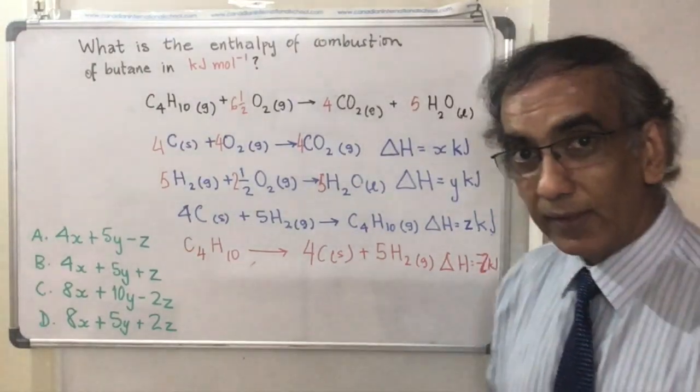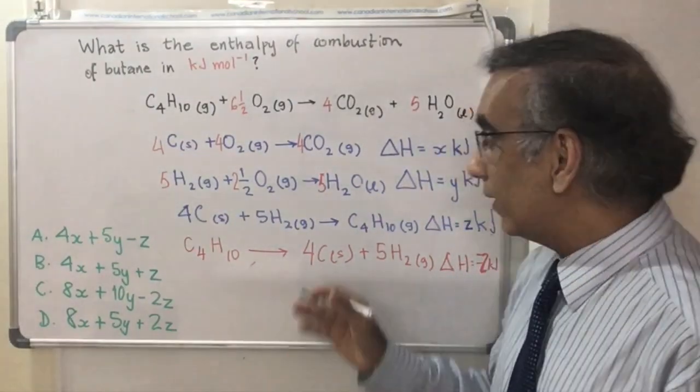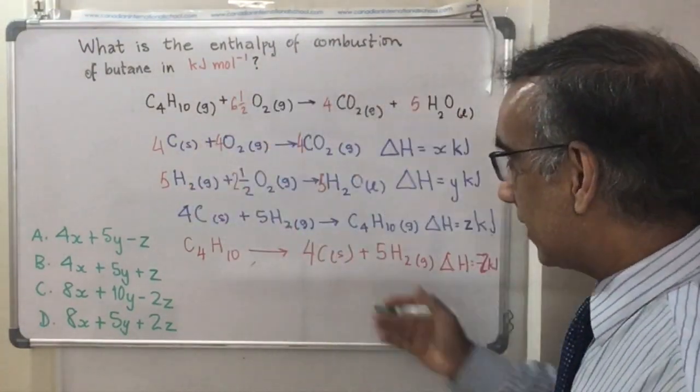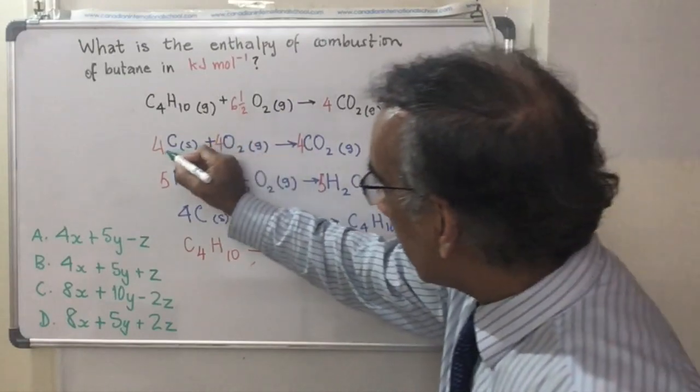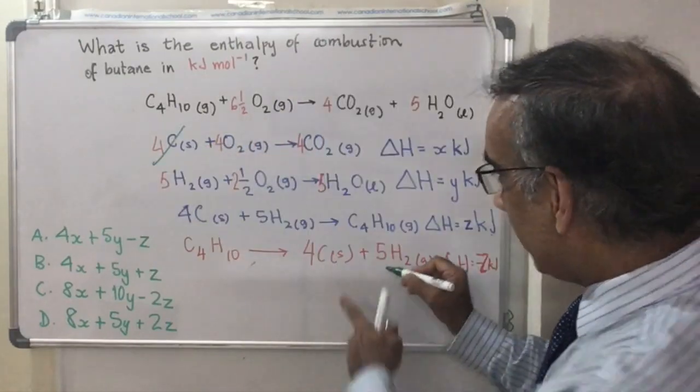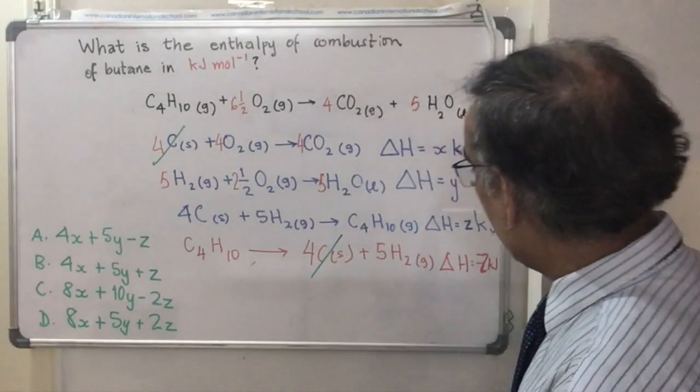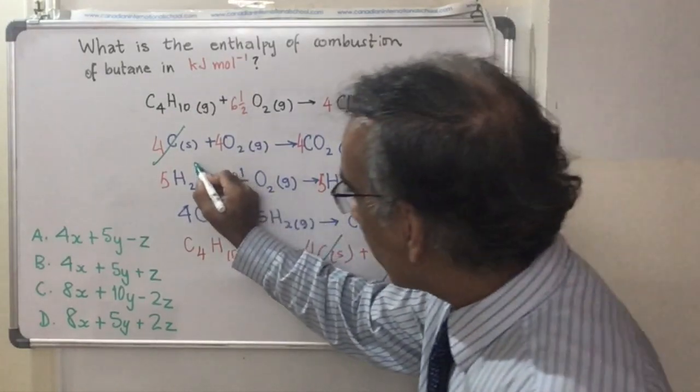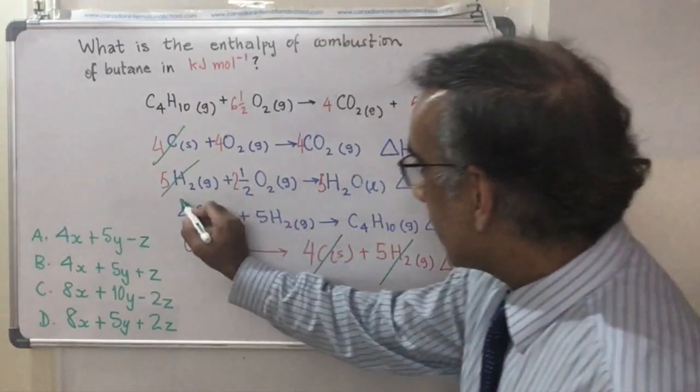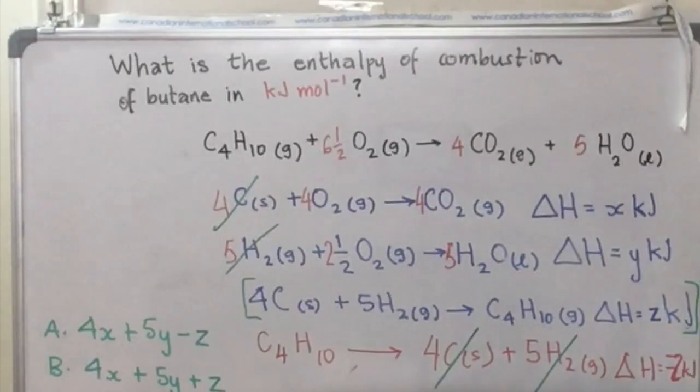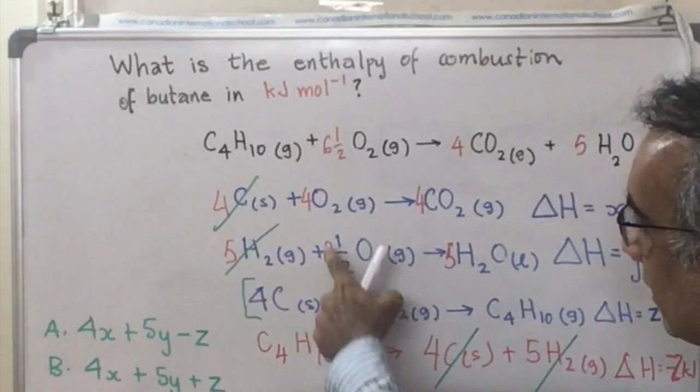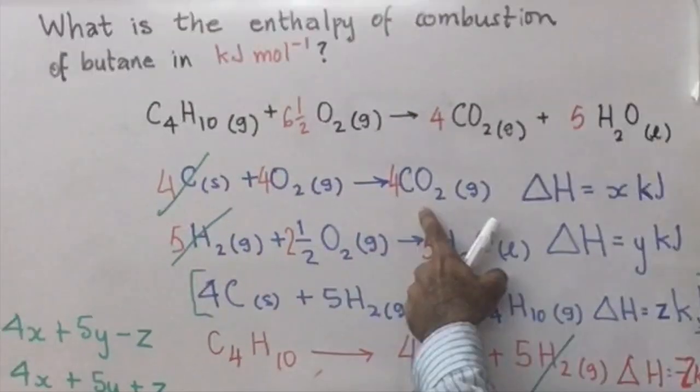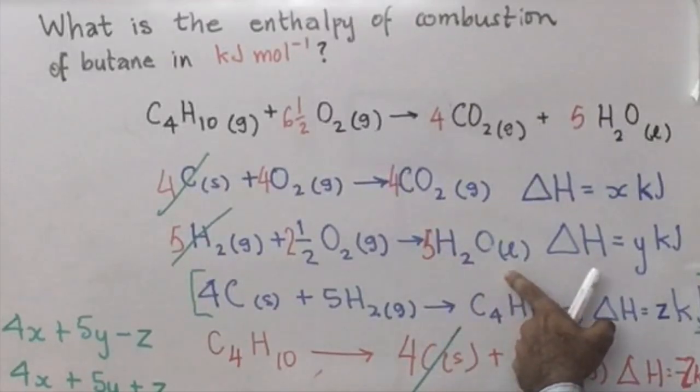So, let's take a look at the cancellation. Remembering that you can only cancel things on the reactant side with things on the product side. So, you've got four carbons here and that would cancel with these four carbons from this reversed equation. You've got five hydrogens here and that would cancel with these five hydrogens here. Remember, this equation was the one that was rewritten. And what you are left with is six and a half oxygens, butane, four CO2 and five H2O.